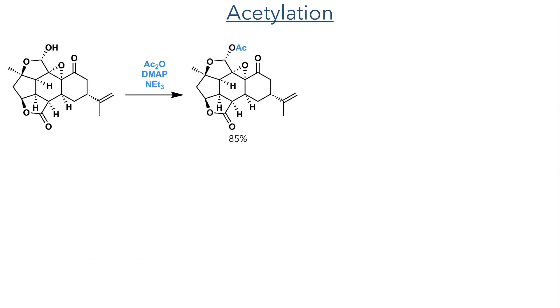In the next step, the hydroxyl group of the hemiacetal was acetylated using acetic anhydride and DMAP in an 85% yield. This electron-withdrawing acetate was required for a semi-pinacol rearrangement.